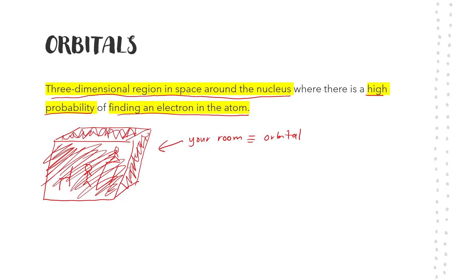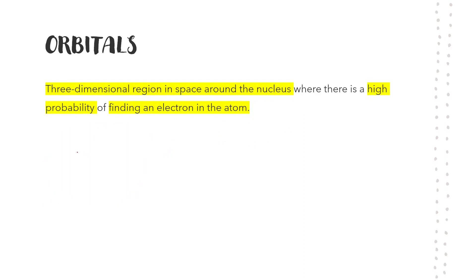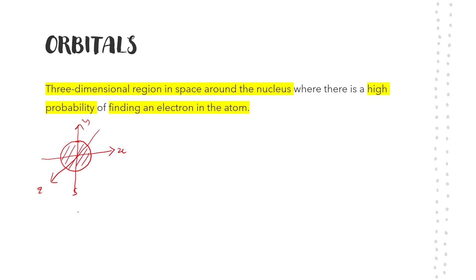The same thing for the electron. There is a region in space. For example, there is orbital S. You should see this in 3D, with axes X, Y, and Z. There is high probability of the electron being inside here if the electron is at orbital S. That is the idea of what an orbital is.